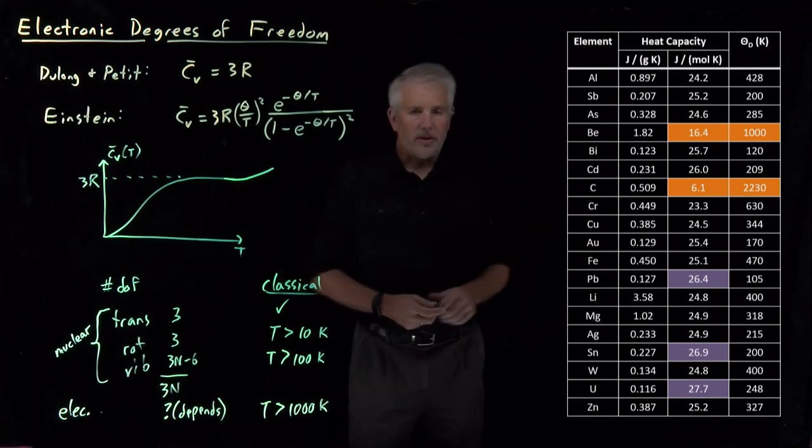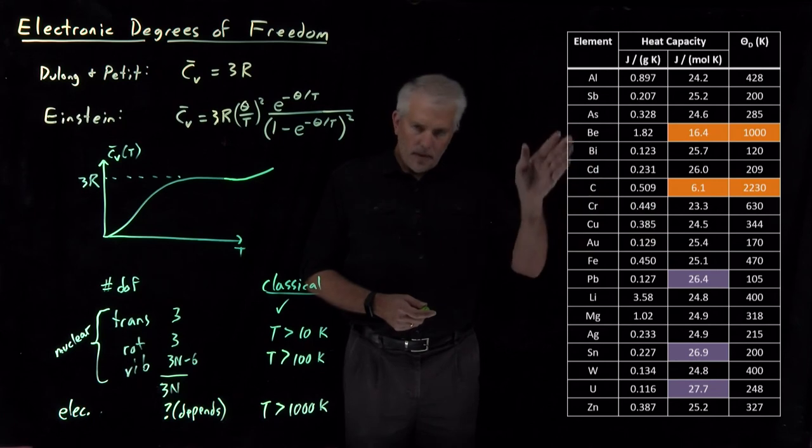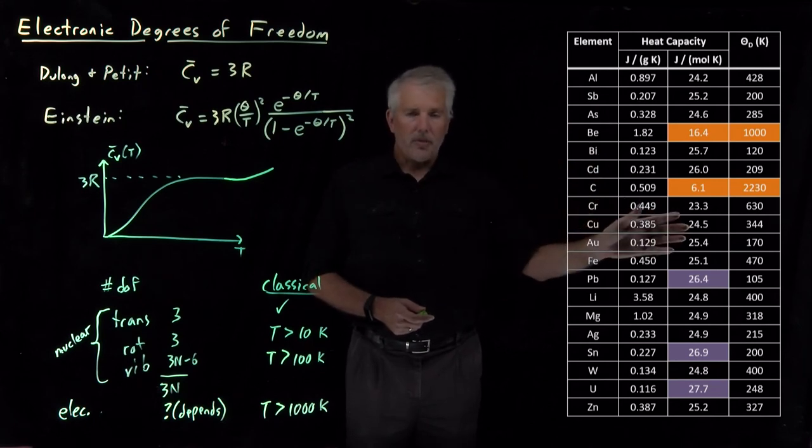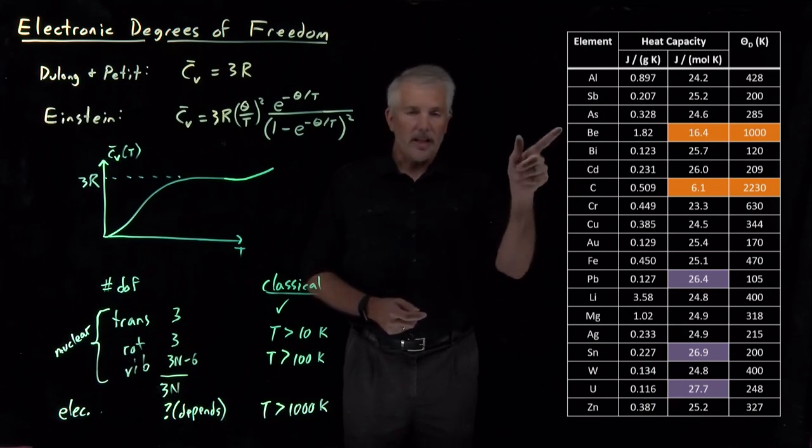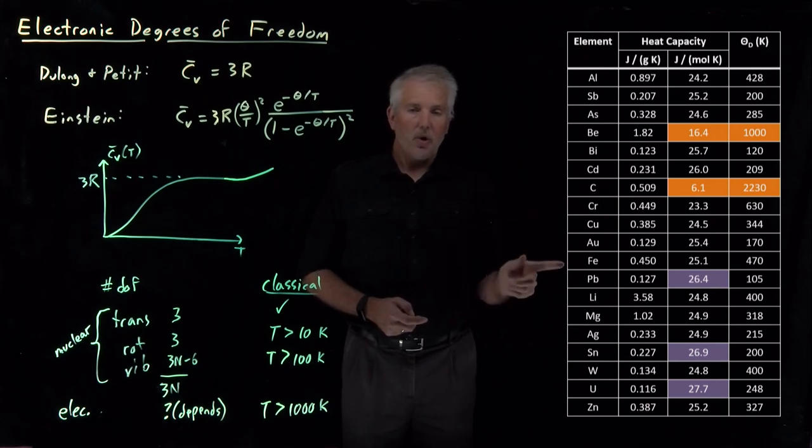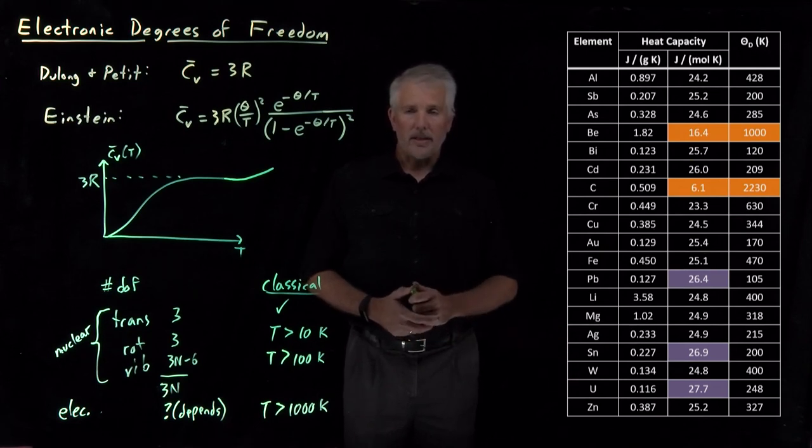So as a summary of what we understand about these heat capacities now, if a solid, many solids have Equipartition Theorem values for their heat capacities, they might be too low if the vibrations in the solid are not yet classical at a particular temperature, or they might be higher than predicted by the Equipartition Theorem if they're not just fully classical at that temperature but also have some low-lying electronic excited states.